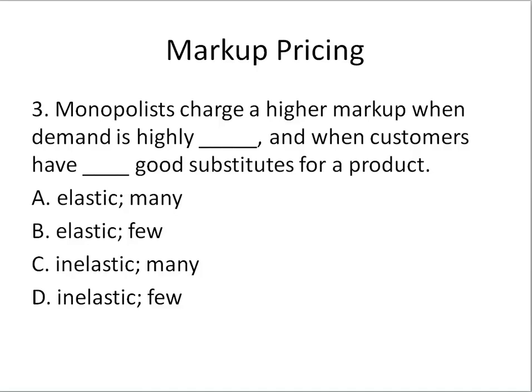Next, markup pricing. Markup pricing means you can charge more to people who are more inelastic. Charge a higher markup when demand is highly inelastic — that's when customers have few good substitutes. If there are perfect substitutes, demand is perfectly elastic and perfectly competitive firms can't markup price. So it helps to have a differentiated product where there are no good substitutes.